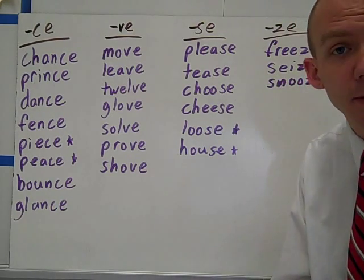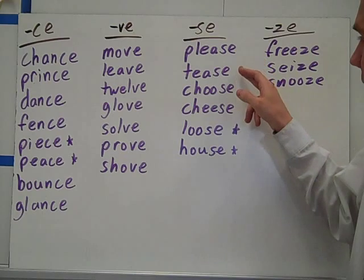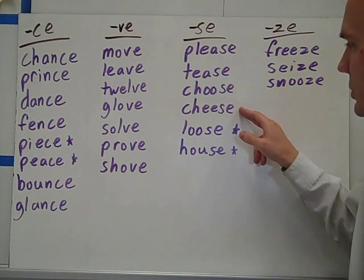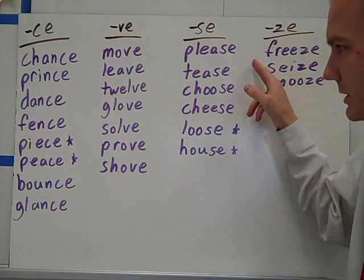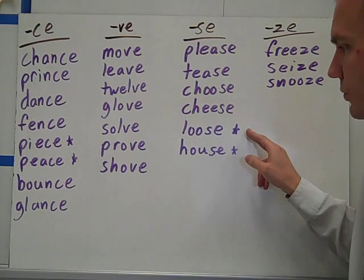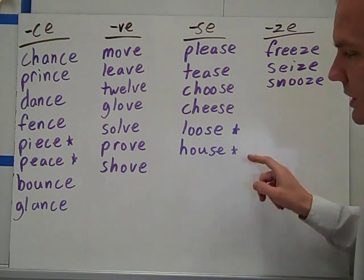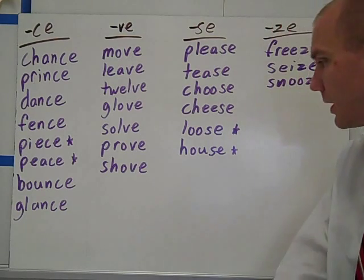S-E, we get a little complicated here. Please, tease, choose, cheese — all with a Z sound at the end. And then loose and house. Loose and house could be oddballs based on their sounds.